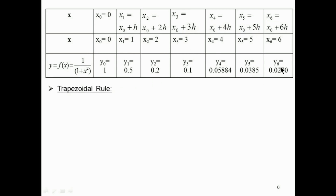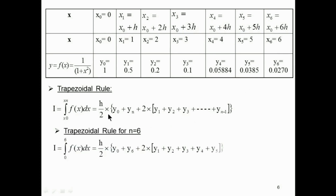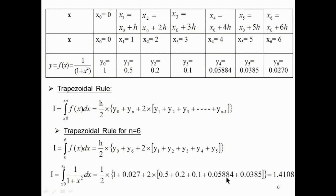Here n = 6, so the trapezoidal rule is written for 6 strips: integral from 0 to 6 of f(x) dx = (h/2) × [y0 + y6 + 2 × (y1 + y2 + y3 + y4 + y5)]. Since y0 is already taken, the remaining terms are y1 through y5. By substituting all values of y, the integration using the trapezoidal rule equals 1.4108.